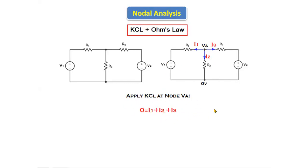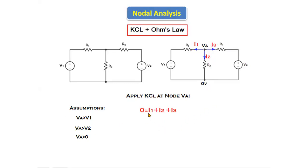The next step is to make assumptions. I am assuming Va is greater than V1, Va is greater than V2, and Va is greater than zero. These are the three assumptions. Using these assumptions I will now write the KCL equation.